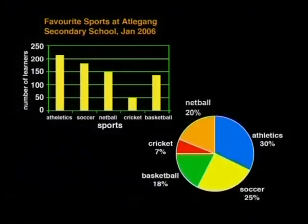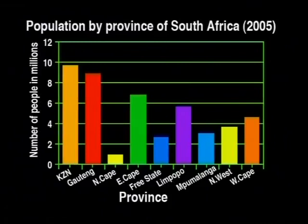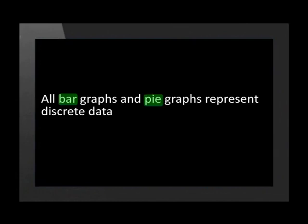This bar graph and this pie graph represented the number of learners choosing different sports at school. So we can say the data is discrete, as each sport is counted separately. Again, on this bar graph of the population in each province, the provinces are discrete and counted separately — you can't have half a province. In fact, all bar graphs and pie graphs represent discrete data. So if you see a bar graph or a pie graph, you can know for sure that the data on the graph is discrete.